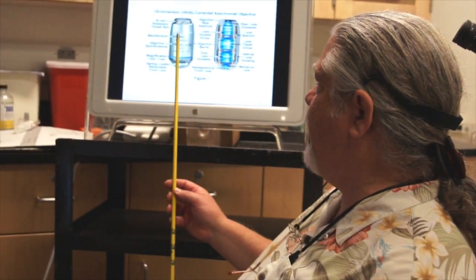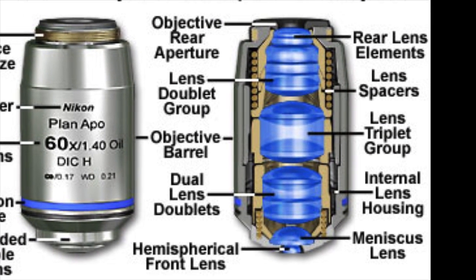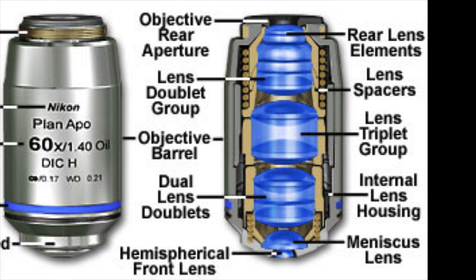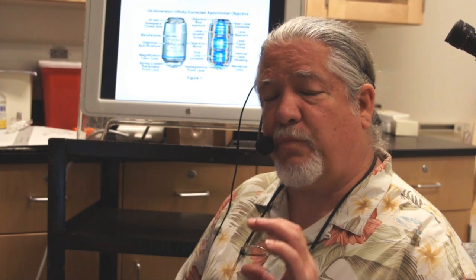You'll see on this screen a 60x objective and a cutaway. The first thing to notice is all of the lenses that are inside the objective. These individual lenses are used to correct for several different aberrations that are caused when we produce glass for magnification purposes. We're going to talk about those aberrations in a few minutes, but first let's talk about the information printed on the barrel of the objective.